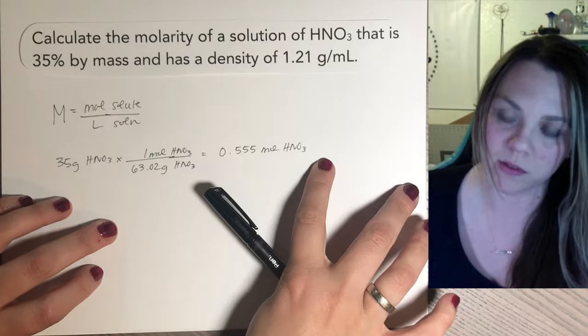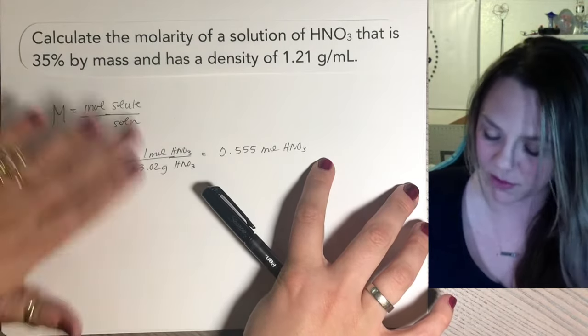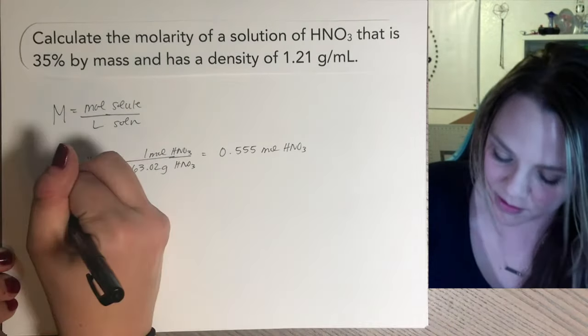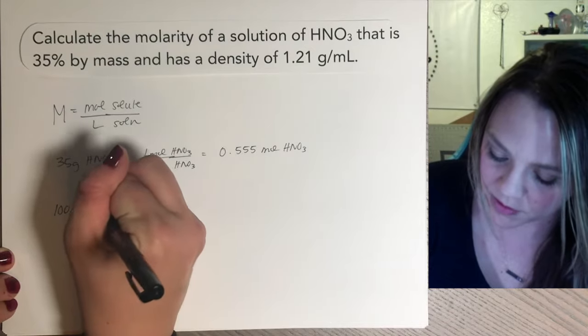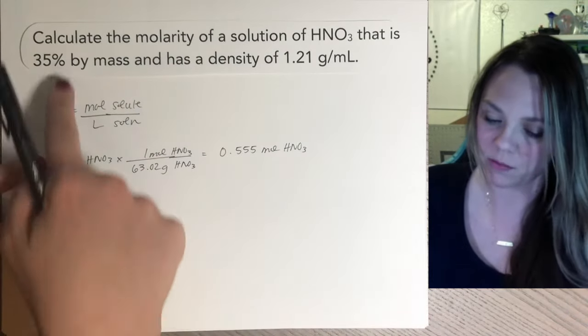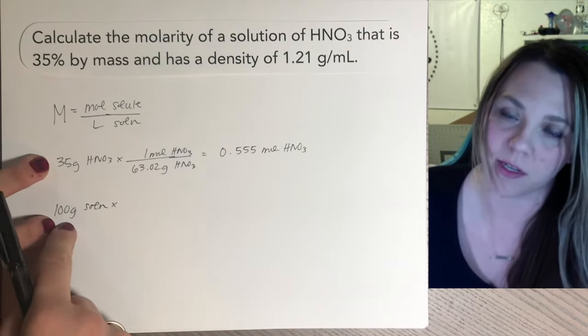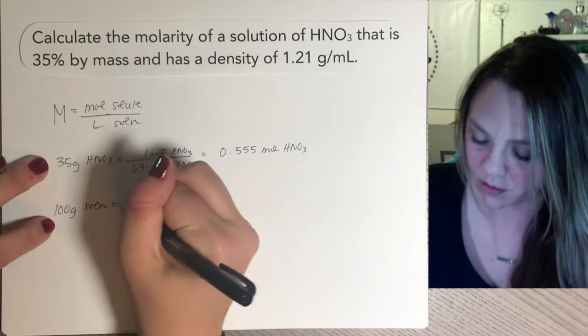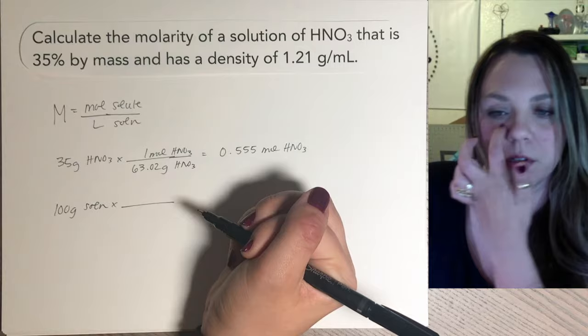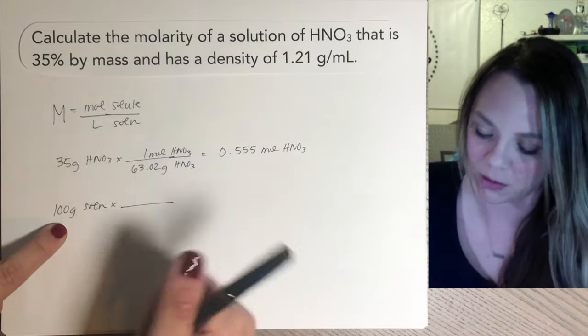Okay, so now I have how many moles of nitric acid I have in this solution. And then I know I had 100 grams of solution, right? This is just from my 35% by mass. And I don't want that in grams. I want that to get into liters.